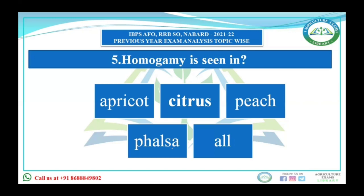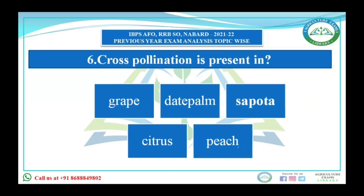Cross-pollination is present in grape, date palm, papaya, citrus, and peach. However, grape, peach, and citrus were also listed under self-pollination previously, so you must identify the one option where cross-pollination actually takes place among the given choices.